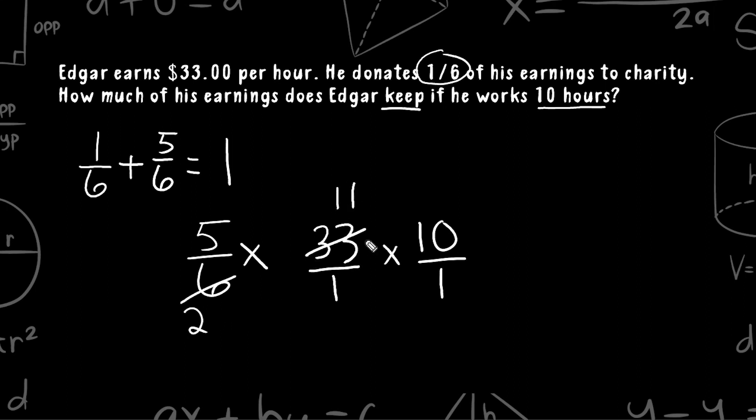Now, 2 and 10 share a common factor of 2. 2 goes into itself once and 2 goes into 10 five times. Now, if you take a look, all of our denominators are 1s. That means our denominator is going to have a product of 1. Now, at the top here, all we have to do is multiply all three of these numbers together.